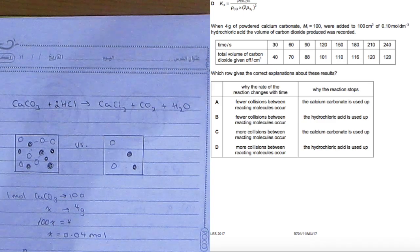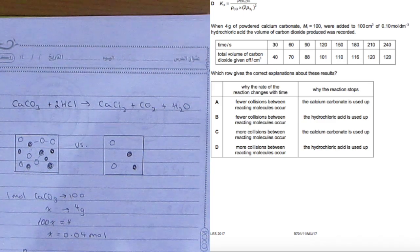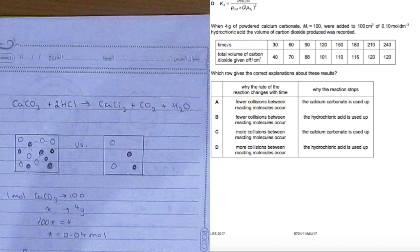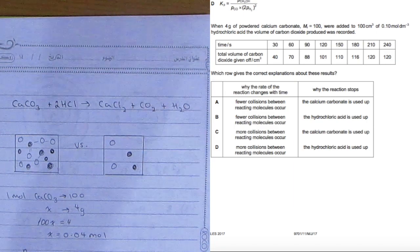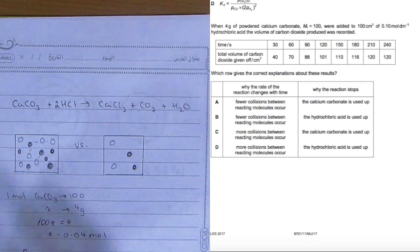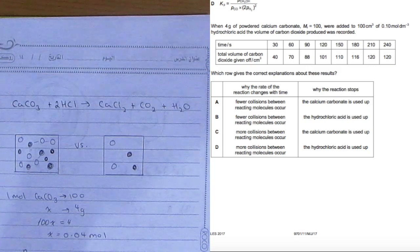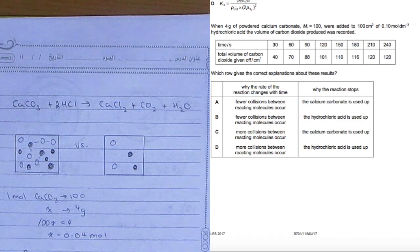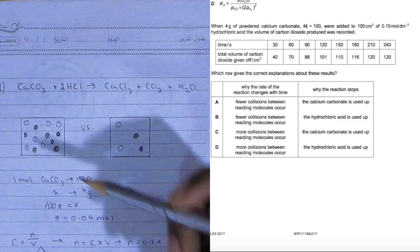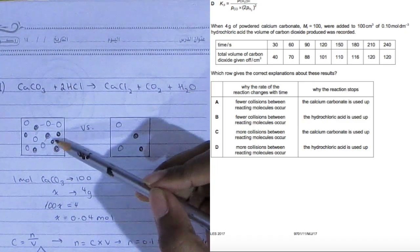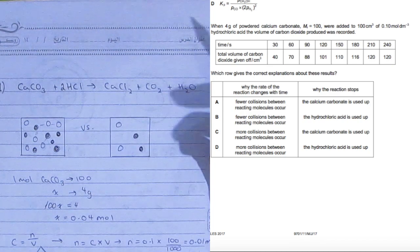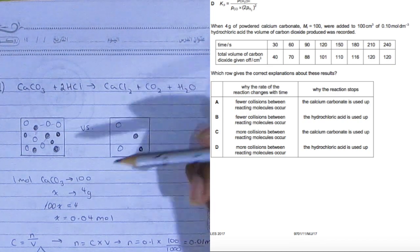For question 11, which role gives the correct explanation about these results? Why does the rate of reaction change with time? You can tell by the table that the total volume of carbon dioxide gas given off keeps decreasing over time. The reason is because there are fewer collisions between the reacting molecules occurring. If you look at the first drawing, you see that there's a lot of particles next to each other in a small area, so the likelihood of them colliding is much greater than in the second box.